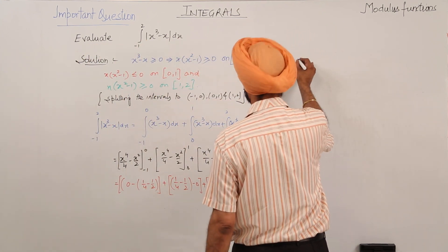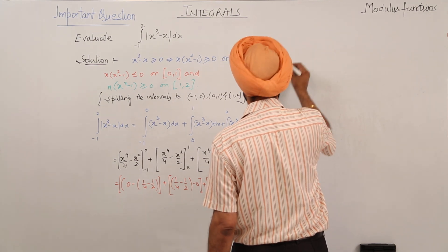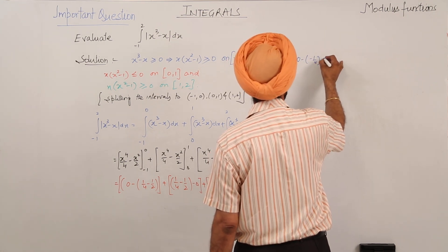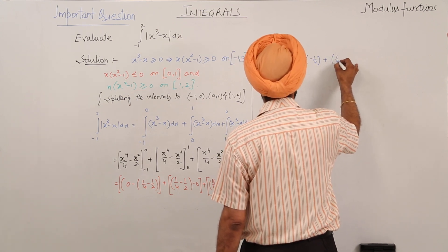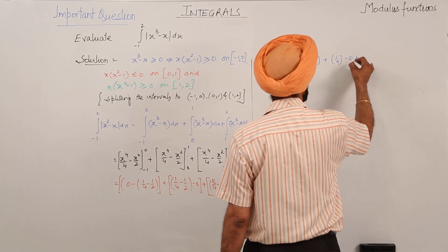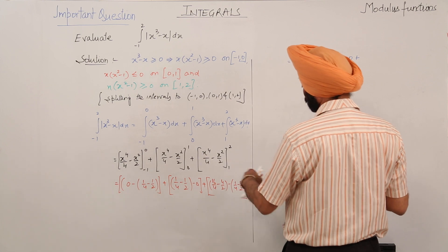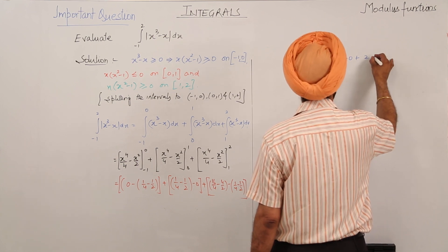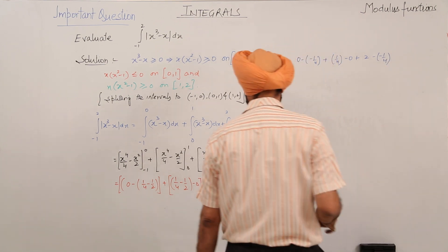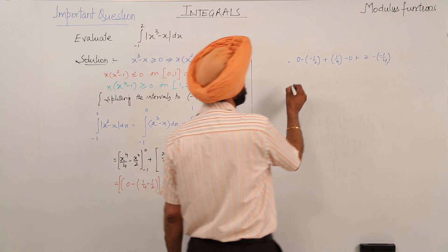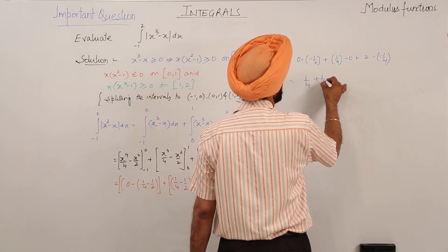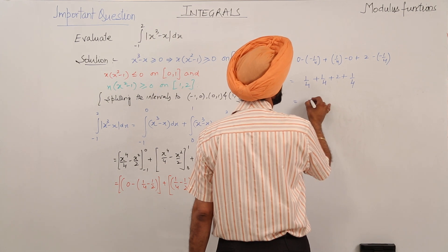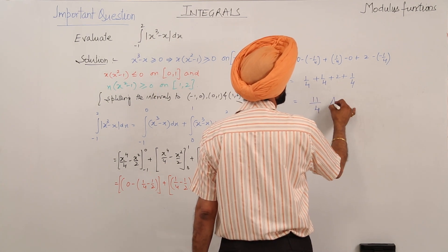Now this becomes 0 minus (-1/4) plus (1/4 - 0) plus (4 - 2) minus (-1/4 + 1/2). After calculation, this becomes 1/4 plus 1/4 plus 2 plus 1/4, which equals 11/4. And this is the answer.